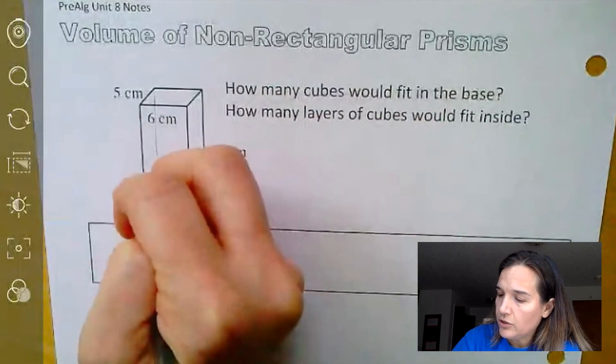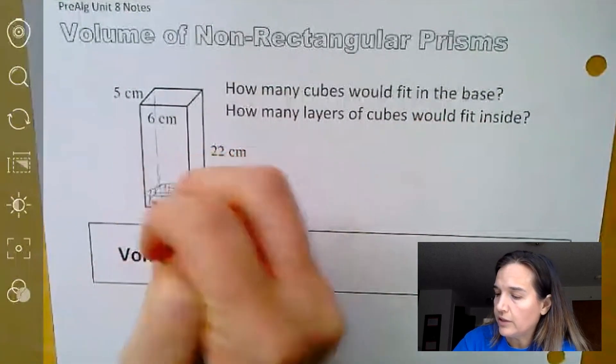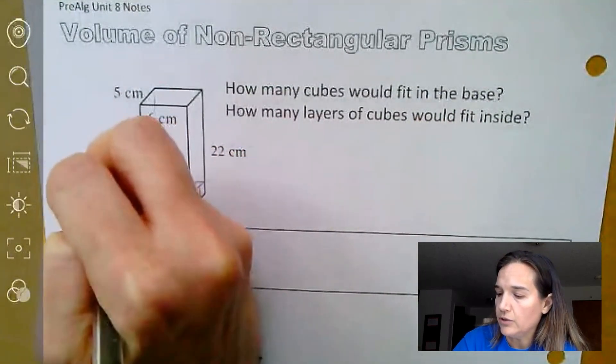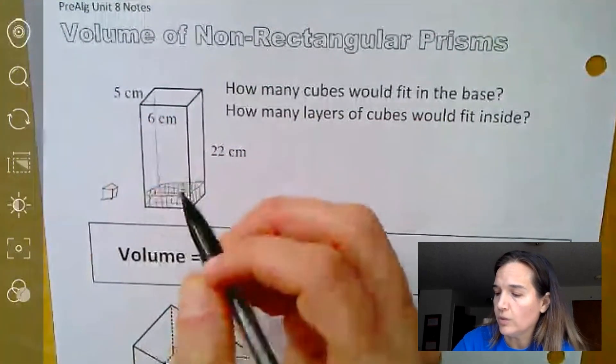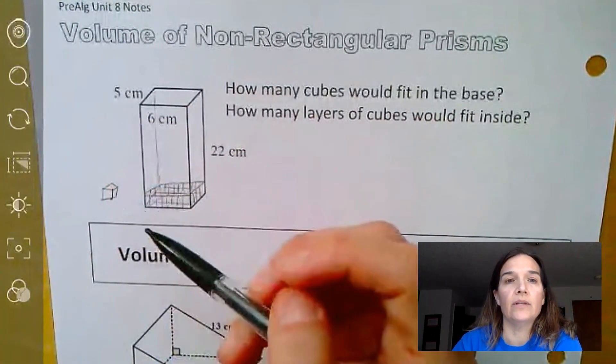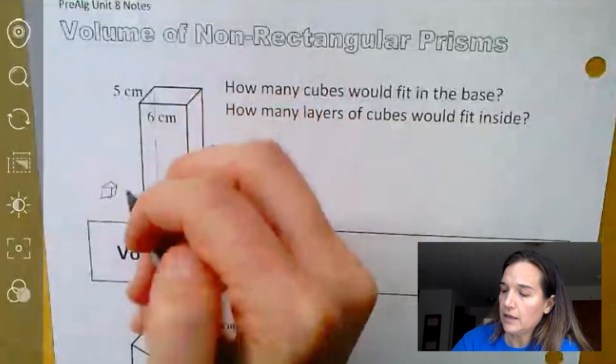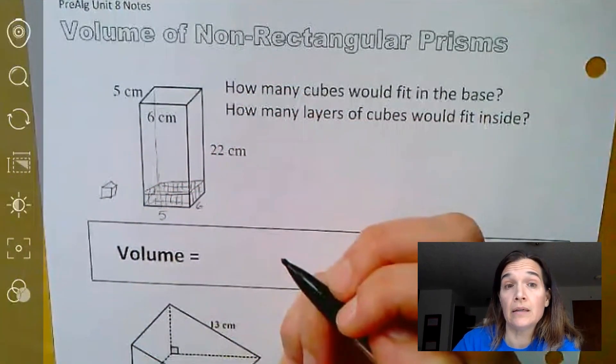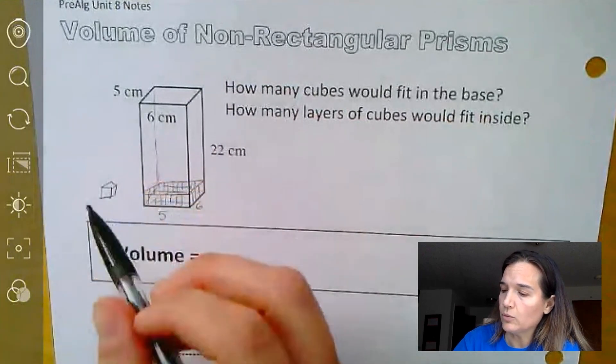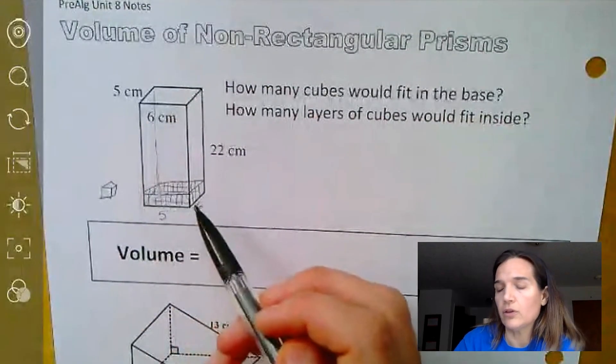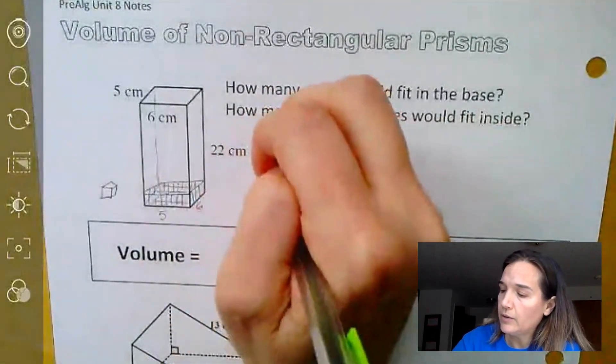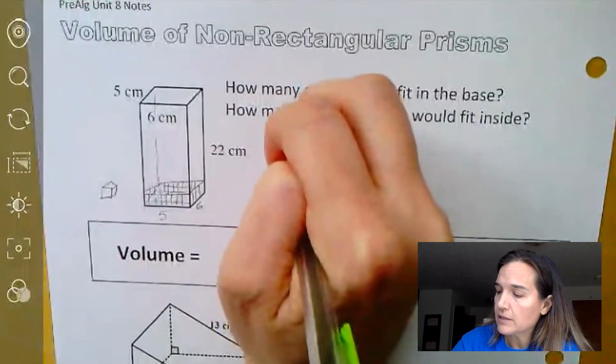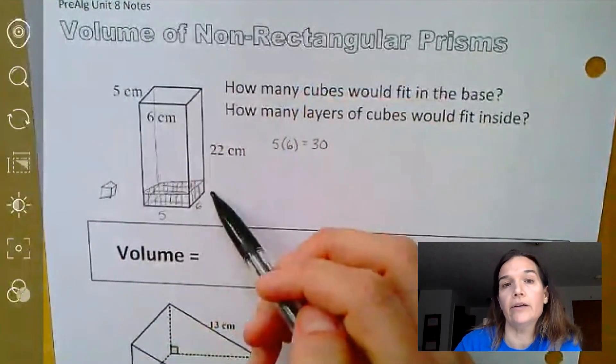So again, looking at how many cubes could we fit in here, if we could fit a bunch of little tiny cubes inside, each of one centimeter by one centimeter by one centimeter. And noticing that it's a five by six base means that if each of these were one centimeter per side, we'd be able to fit 30 cubes in here. That would give us five times six, 30 cubes would fit on that bottom layer.